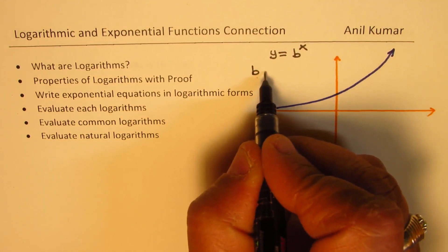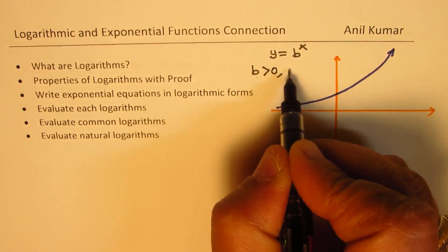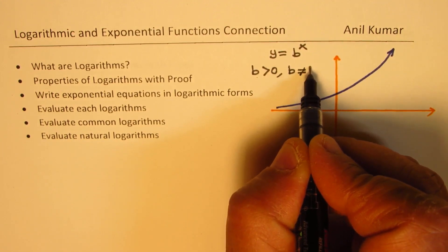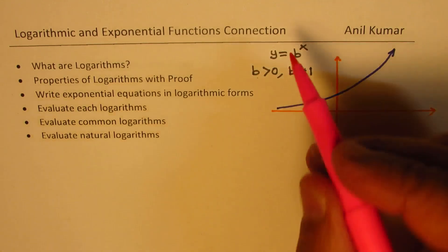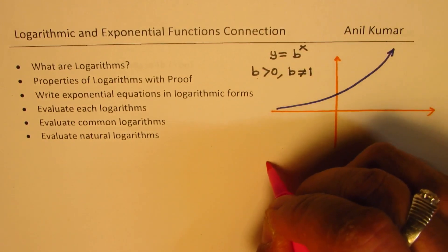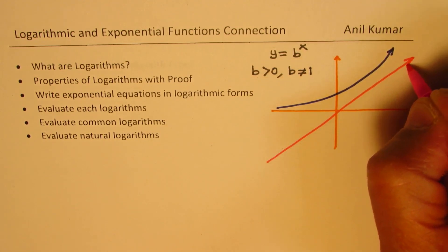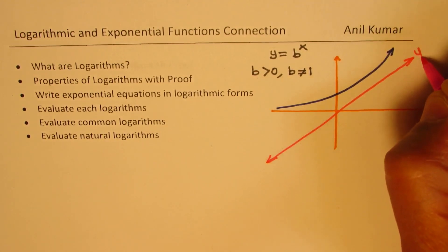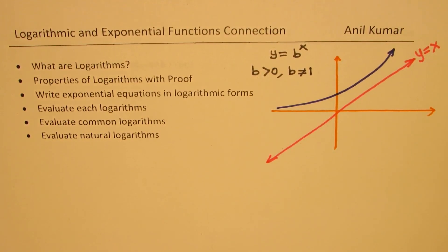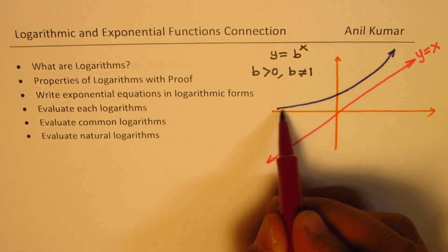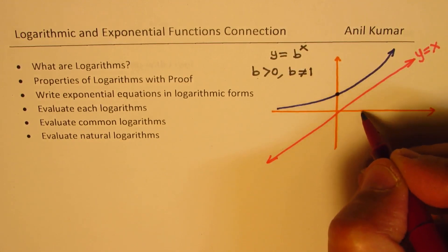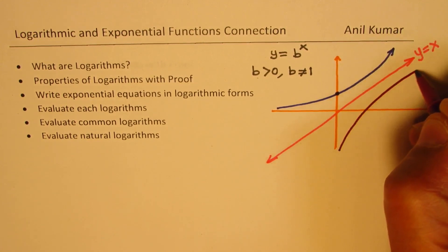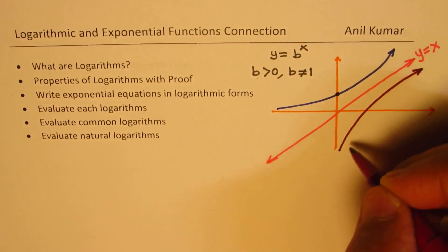The restrictions on b are that b is greater than 0, and b is not equal to 1. Logarithms, as I said, is basically the inverse of exponential functions. To find the inverse, we reflect the graph on the line y equals x. The horizontal asymptote becomes the vertical asymptote, and the y-intercept becomes the x-intercept. What you get is an always-increasing graph with a vertical asymptote.